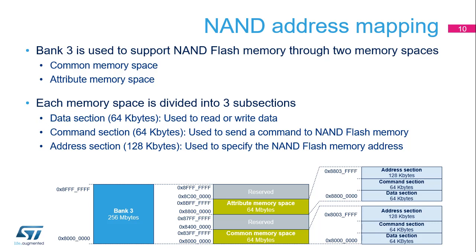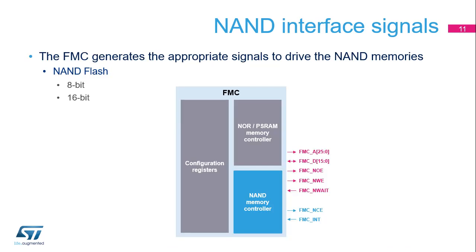Each memory space is subdivided into three sections: a data section of 64 KB used to read or write data from NAND Flash memory; a command section of 64 KB used to send a command to NAND Flash memory; and an address section of 128 KB used to specify the NAND Flash memory address. The FMC generates the appropriate signals to drive NAND Flash memory, with address, data, and control signals shared with the NOR and PSRAM controller. The command latch enable (CLE) and address latch enable (ALE) signals are driven by address signals connected to address lines 16 and 17 respectively. ALE is active when writing to the address section and CLE is active when writing to the command section.